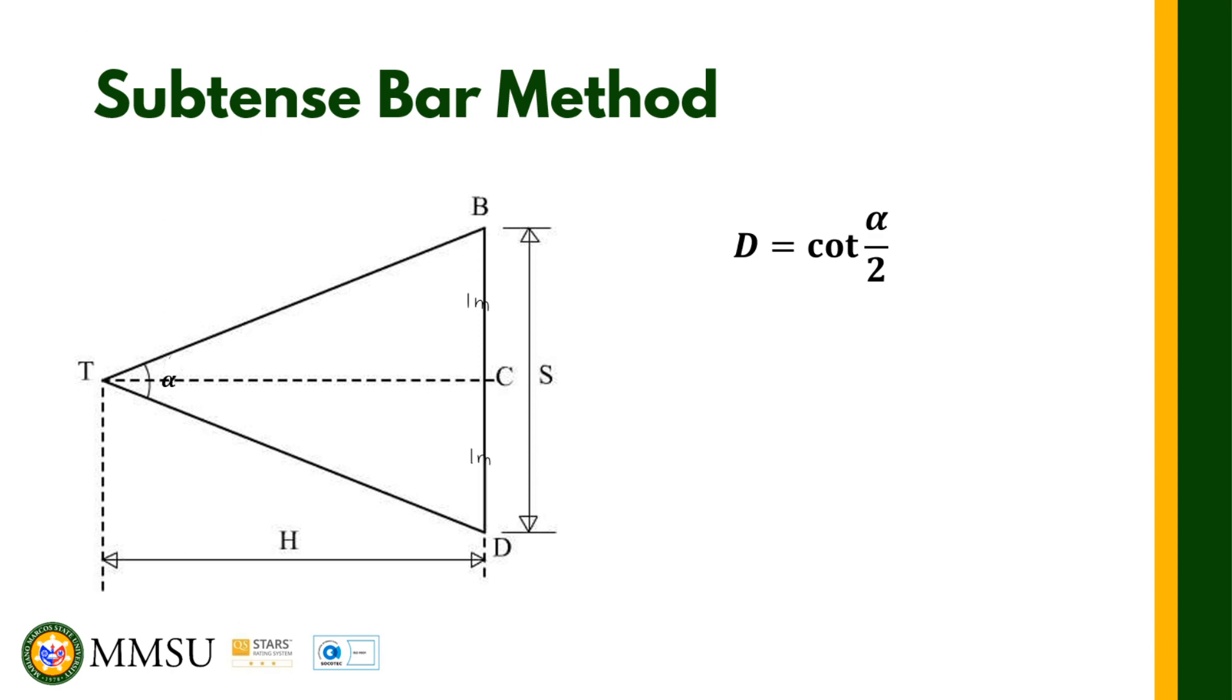Using simple trigonometry, we can compute for the distance D. The distance is equal to the cotangent of alpha over two. It's just half of alpha. You can verify that using this triangle shown here.